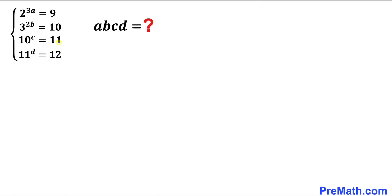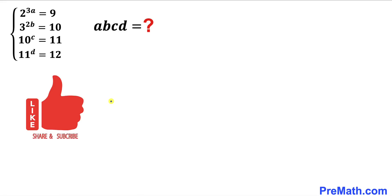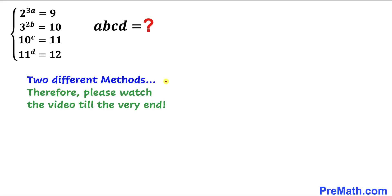Welcome to Pre-Math. In this video we have a system of exponential equations: 2^(3a) equals 9, 3^(2b) equals 10, 10^c equals 11, and 11^d equals 12. We are going to find the value of a times b times c times d. I'm going to share two different approaches, so please watch the video till the very end.